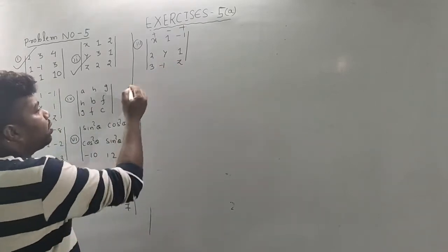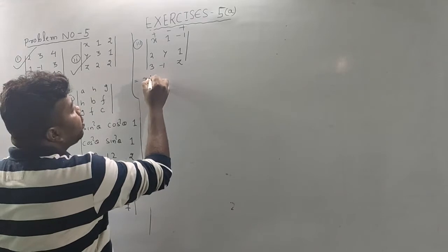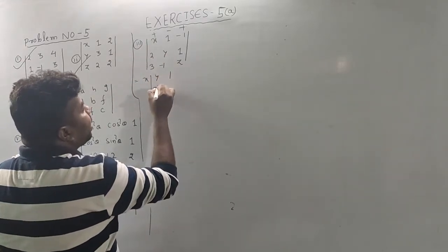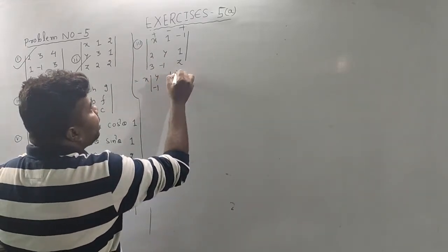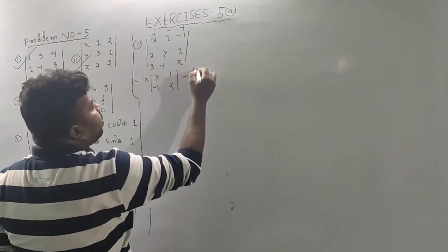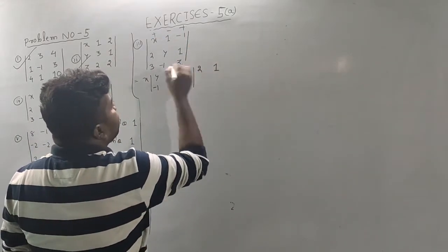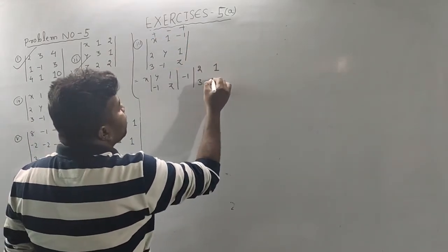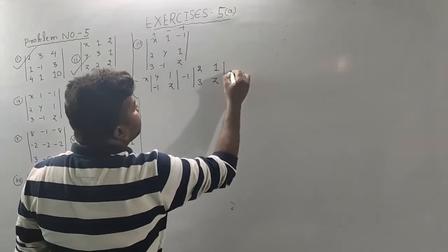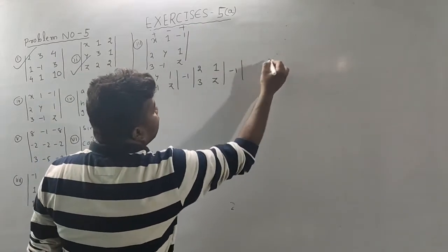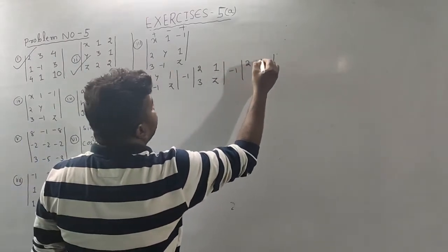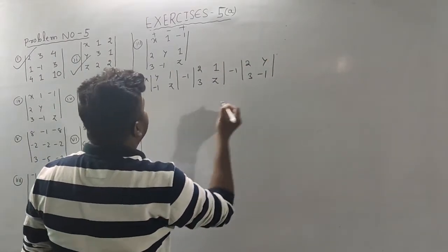So the next: x into x. So y, 1, minus 1, z, minus 1. Then z: 2, 1, 3, z. So column. Omega: 2, 3, minus 1.